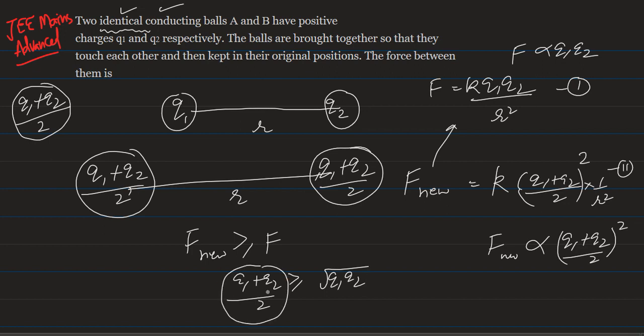So the relation having Q1 plus Q2 by 2 in the expression of force, that's equation 2. Obviously this force is greater than equation 1 because in equation 1 we have Q1 Q2 and here we have Q1 plus Q2 by 2 squared. So with respect to that, the new force will be greater than or equal to F. Thank you.